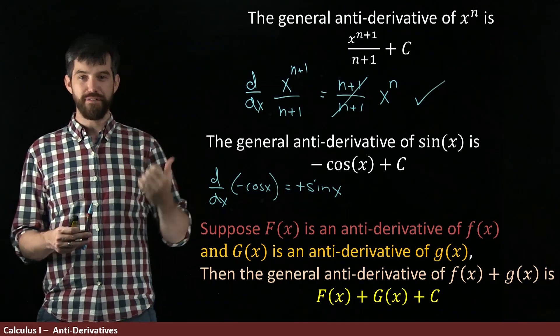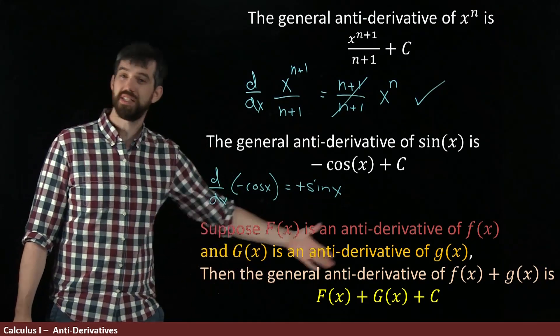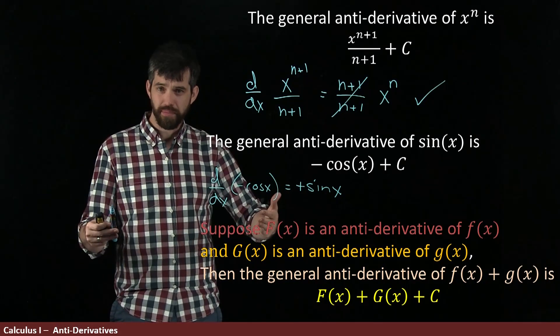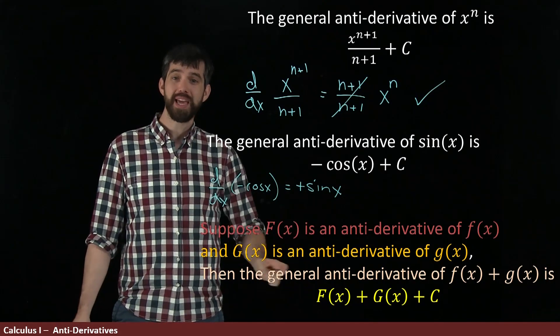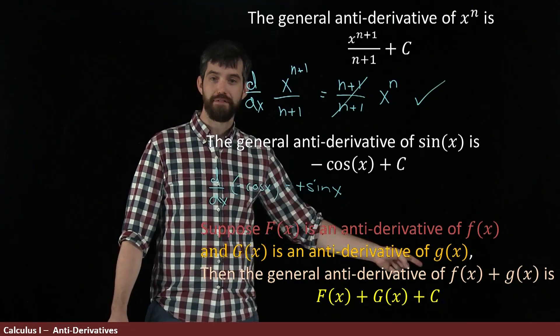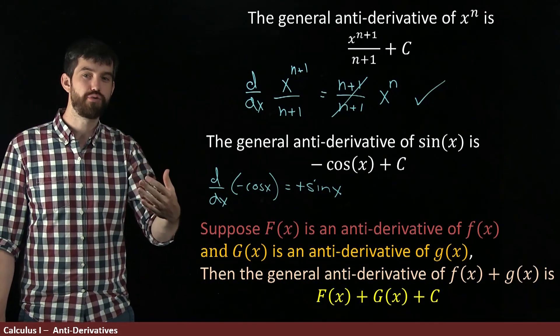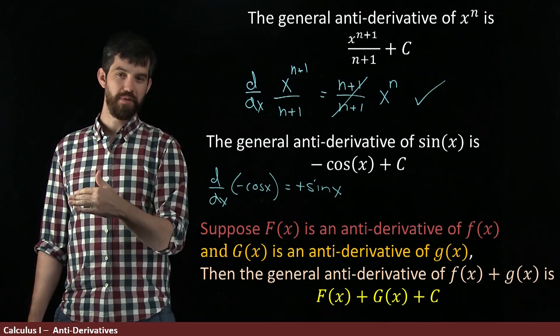Okay, so again, we should verify that this is the case. Let's imagine I'm taking the derivative of this bottom here. Well, it's a sum. And the derivative of the sum is the sum of two derivatives. So this would be big F prime plus big G prime, which is just little f and little g. So indeed, we have this additivity property for antiderivatives, just as we did for derivatives.